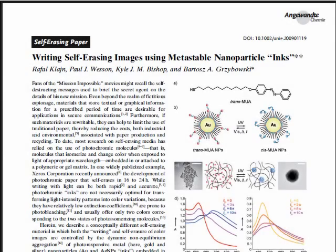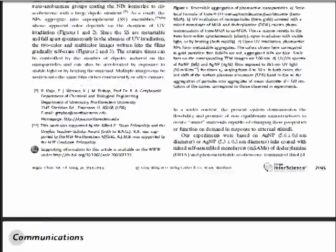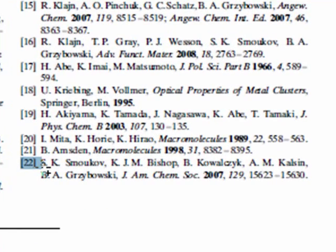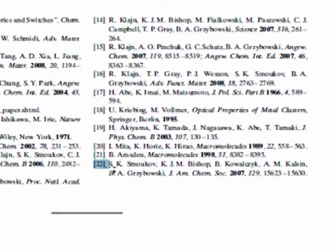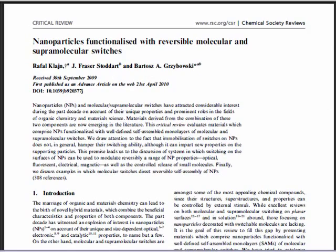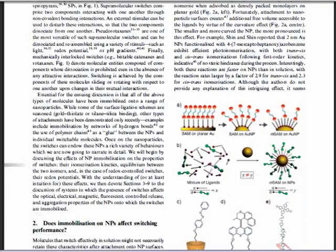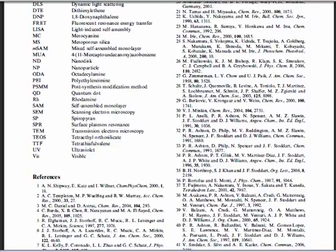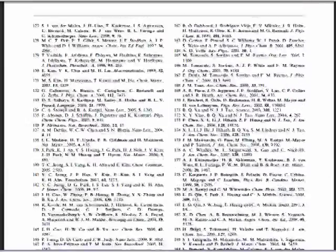In general, though not always, review articles have longer reference lists since they are writing comprehensively about a topic. For example, this research article has 22 references, while the following review article has 308. A research article may have, on average, 3 to 40 or so references, and a review article typically has many more than that, sometimes in the hundreds.